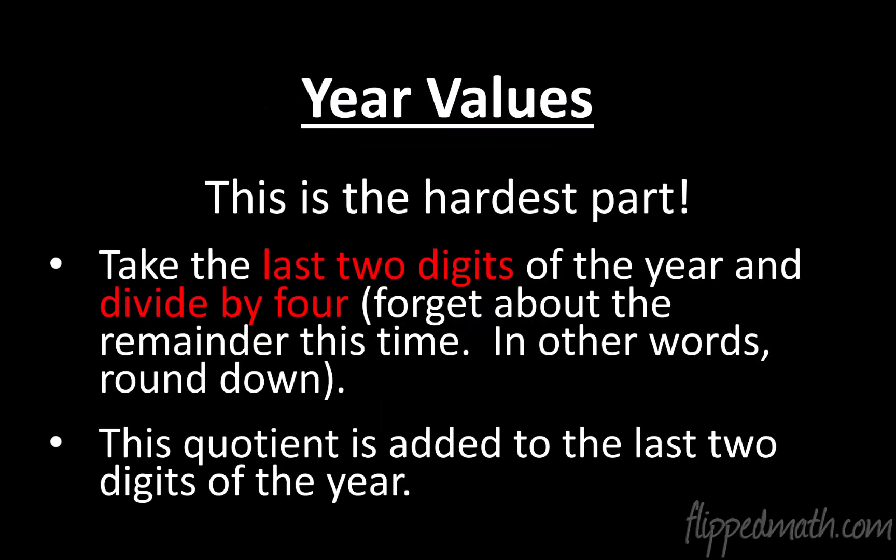Now to year values. And I got to warn you, this is the hardest part of this whole thing. This is the part that you may struggle to do in your head. I'm going to give you some little hints to make this easier to do in your head. But most of you will probably need to get a piece of paper out and be able to write down things as we're doing this. So the year values, we take the last two digits, the last two digits of the year, and we divide by four. And we get to forget about what the remainder is this time. We don't focus on that. No decimal. We round down, or another fancy word for that is we truncate.